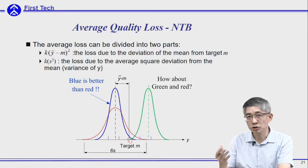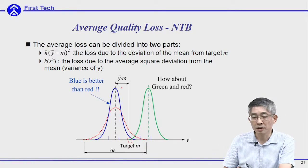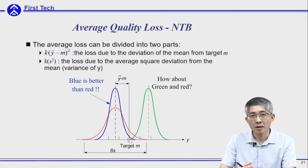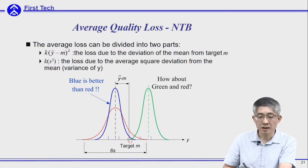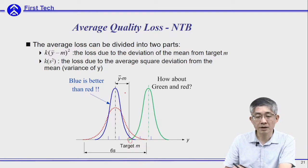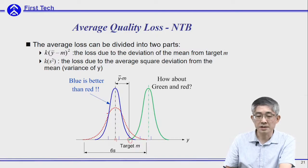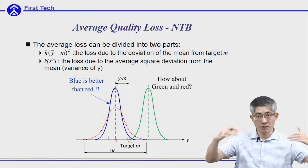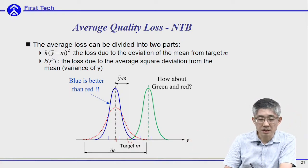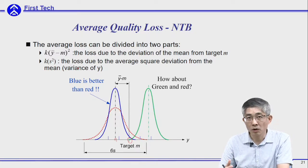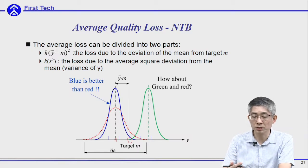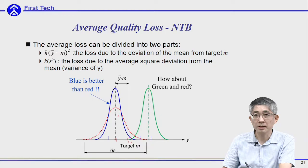The average quality loss is composed of these two parts, and you can use it to differentiate which design is better. For example, comparing the blue distribution and the red distribution — two different designs — if they both center at the same place y-bar, then the first part of the loss is the same for both. However, the red design has a larger standard deviation, giving it a flatter distribution. Therefore, s squared is larger for the red design, and the blue design is better.